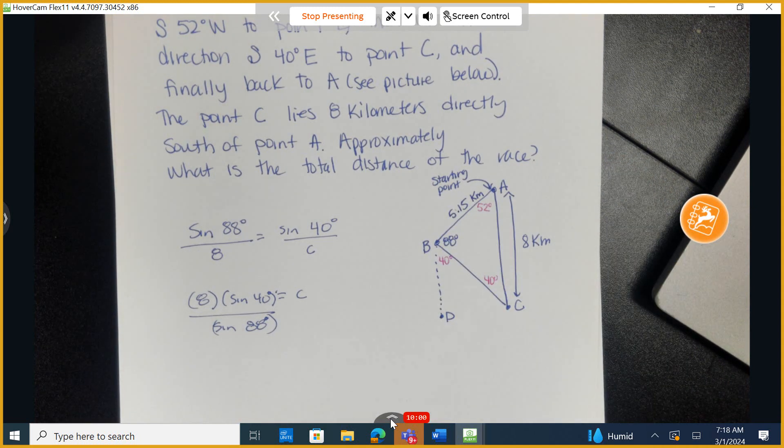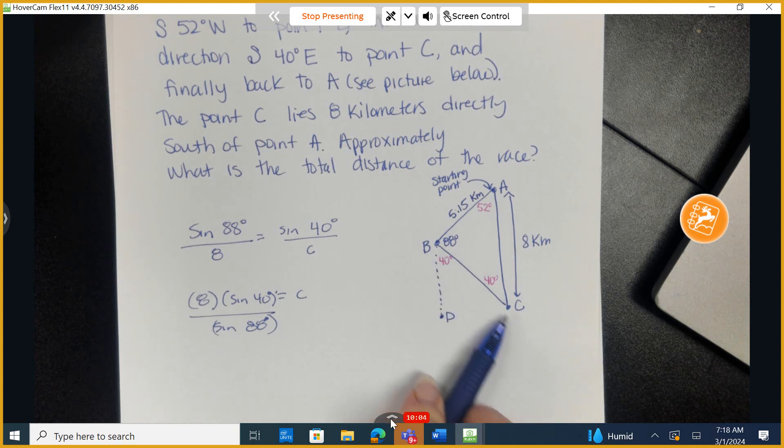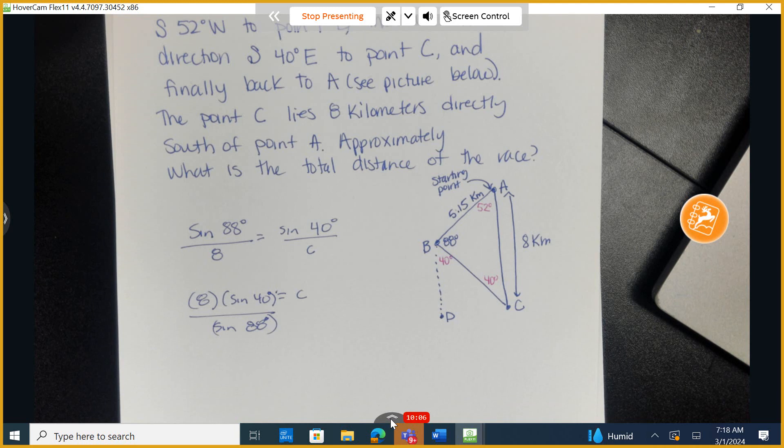Turn to your partner. Why can you not use the Pythagorean theorem to figure out this third side? Why can you not do that? Pythagorean theorems can only be used for right triangles. So how do we figure it out?